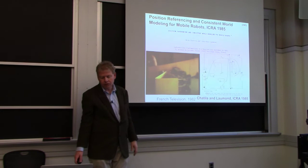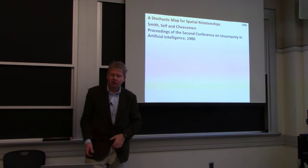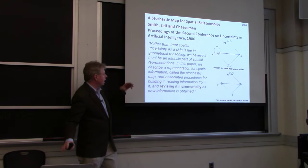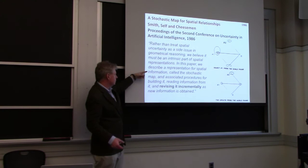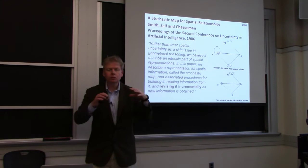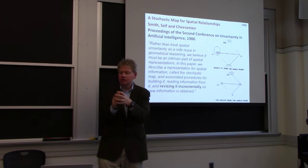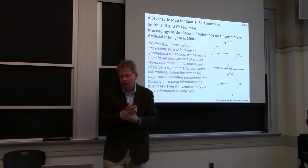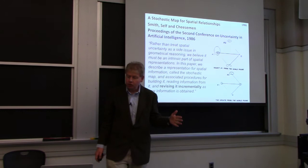In the same conference, Raja Chatila's group advocated for position referencing and consistent world models — aiming for consistency so that you could represent the world in terms of geometric primitives and combine data in a consistent way. Around the same time, Smith, Self, and Cheeseman came out with a very influential paper called 'A Stochastic Map for Spatial Relationships,' where rather than treating spatial uncertainty as a side issue, they believed it must be intrinsic to the spatial representations. They represented position errors for robot poses and objects in the world with Gaussians, visualizing uncertainty with error ellipses, and combining measurements with linearization over multiple positions — essentially Kalman filtering. Their paper only had a little hand-sketched example and didn't have an actual implementation.